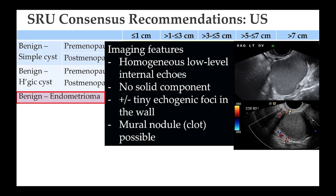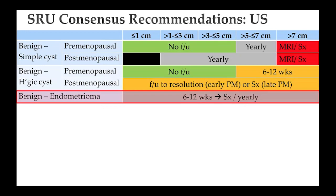Endometrioma has very typical imaging findings: usually homogeneous low-level internal echoes, no solid component, and there may be tiny echogenic foci in the wall or a mural nodule because it's essentially a clot. When you see this, you get ultrasound at six to twelve weeks, and beyond that you decide whether to send the patient for surgery or follow up yearly.